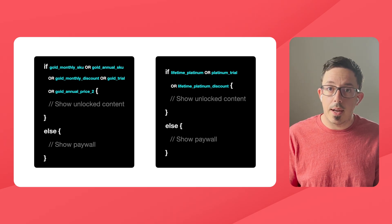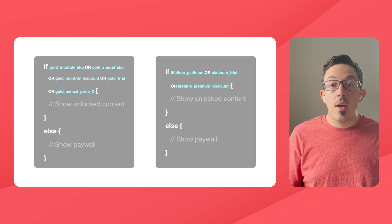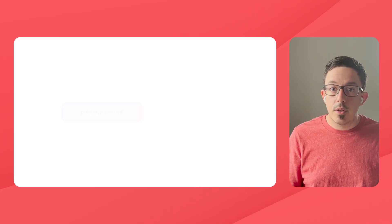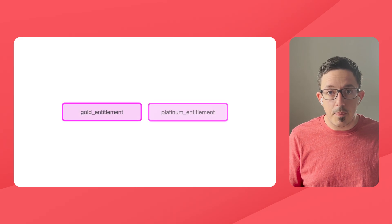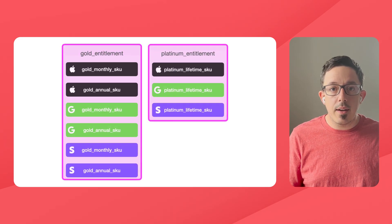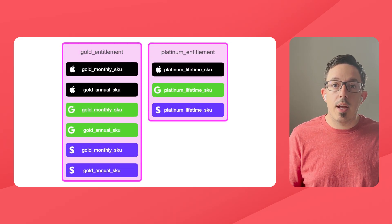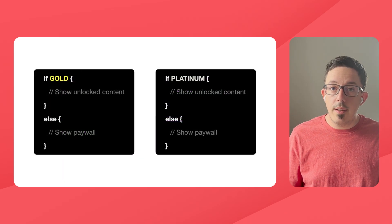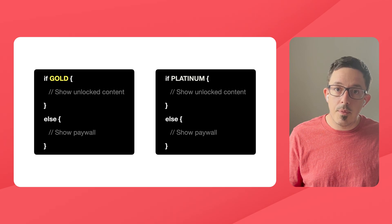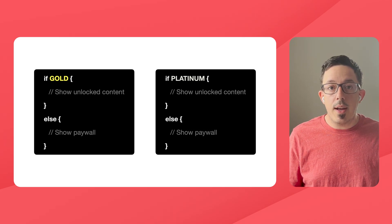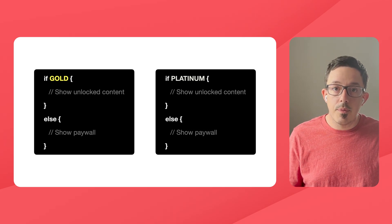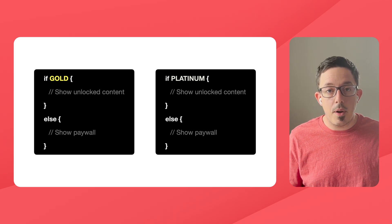This is where entitlements come back into play. We can take our two entitlements — gold and platinum — and add each of our products inside of them, which you'll set up in RevenueCat's simple dashboard. Now we can really simplify our code. Throughout the app, when we have content accessible only to gold users, all we have to ask is: are they entitled to gold? Rather than checking every possible product your app offers.